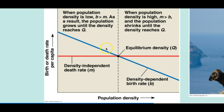On the left side of the graph, birth rate is higher than death rate, so the population keeps growing until it reaches Q — the equilibrium density — where birth rate and death rate are equal and the population stays the same. On the right side of the graph, birth rate is lower than death rate, so the population keeps declining.